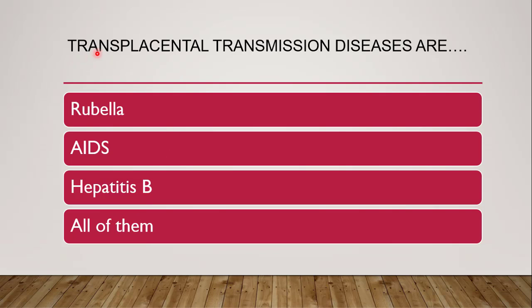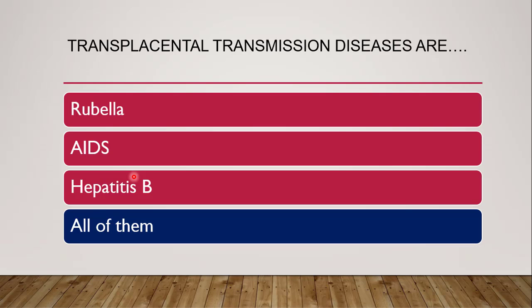Next question: transplacental transmission diseases are? Transplacental transmissions are also known as vertical infections. When a disease agent is transmitted from an infected mother to the fetus, it is called transplacental transmission. The diseases transmitted through this route are whether rubella, AIDS, hepatitis B, or all of them. The correct answer is all of them — AIDS, hepatitis B, and rubella are all possible to transmit from mother to fetus.